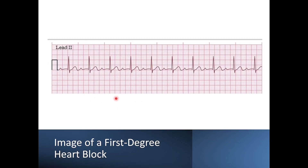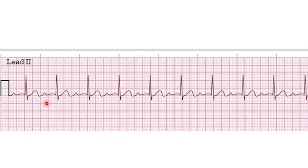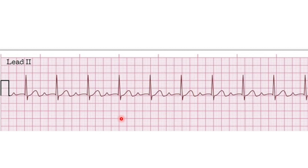Here we can see an example of a first-degree heart block. We want to identify the PR interval — we can see that the P wave matches up at the beginning of the PR interval, and it takes more than one big red box, almost like one and a half, so about 0.32 seconds for this PR interval. That breaks rule two, where the PR interval should not be greater than 0.2 seconds. There's one P wave for every QRS complex, the P waves match with the P waves, and the QRS complexes match — it's just rule two that is broken.